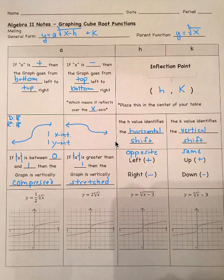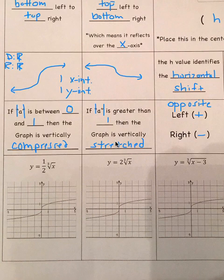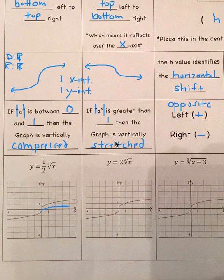Looking at the graphs, each already has the parent function graphed. We're going to plot three points: the inflection point, one spot to the right, and one to the left. For y equals one-half times the cube root of x, it's compressed by one-half, so the cube root of 1 times one-half gives one-half — a very flat graph, very close to the x-axis. For y equals 2 times the cube root of x, when we move one to the right it goes up to two, making a stretched curve.